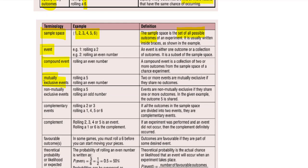Mutually exclusive refers to two or more events that share no outcomes. For example, rolling a five and rolling an even number are mutually exclusive because five is not an even number — one is not part of the other group. Non-mutually exclusive means there is an overlap between the two groups being described, such as rolling a five and rolling an odd number.